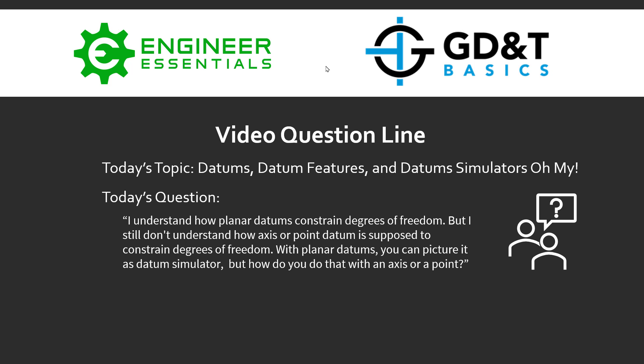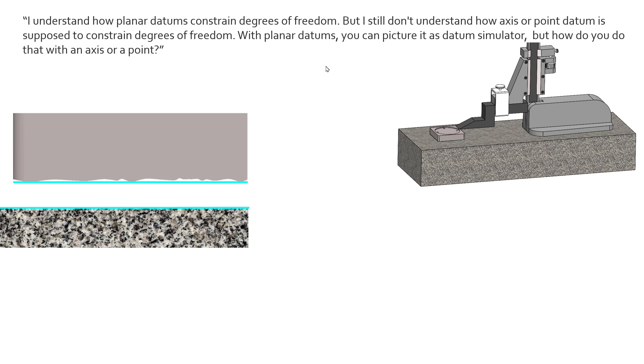This is a really good question and sometimes it's hard to picture conceptually, so let's walk through a couple examples. For a planar example, we have this part here where the bottom surface is flat. That bottom surface is technically called the datum feature—it's the tangible, imperfect surface of that feature.